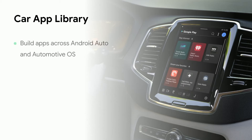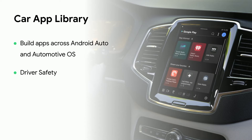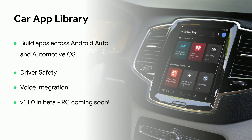The Car App Library allows you to write your code once and make your app available across both Android Auto and Android Automotive OS. The interface is designed with driver safety in mind, which in turn helps you build apps that are safer without needing to become an expert on driver safety. Voice is an important form of input in cars, so apps built with the Car App Library enable you to have seamless integrations with voice assistants. And version 1.1.0 is now in beta, which means you can go to production with the most up-to-date APIs.